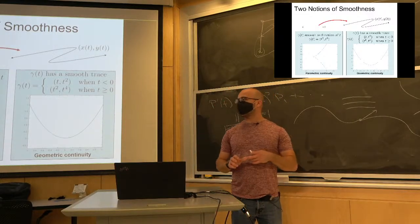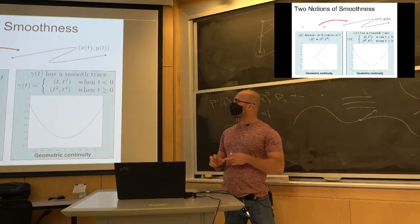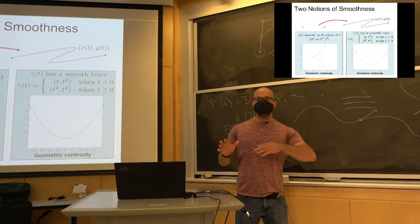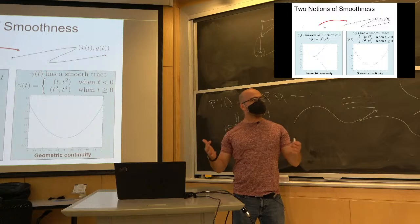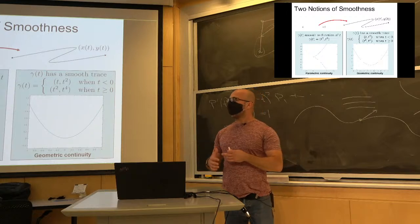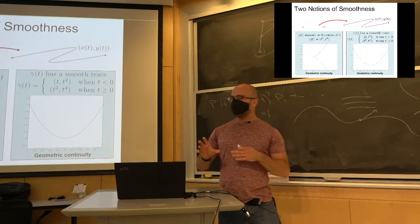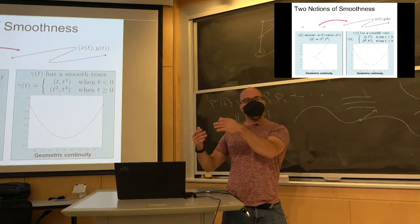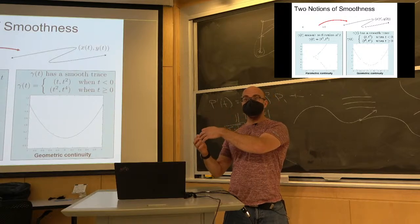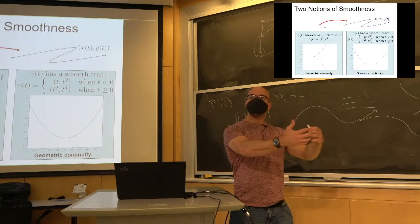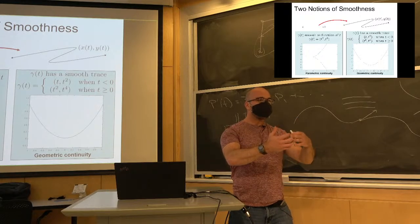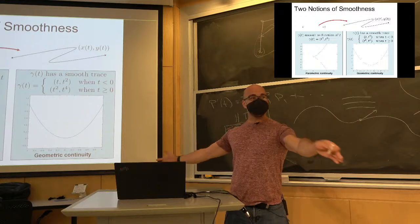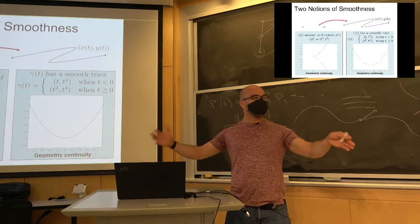The point I want to drive home is that there's what it means for things to join together smoothly as a function of t or of time, and then there's what it means for things to join together smoothly geometrically. Those are not the same — it's not that one is a superset of the other, they're just different. Here I show you counter-examples of both on this slide.